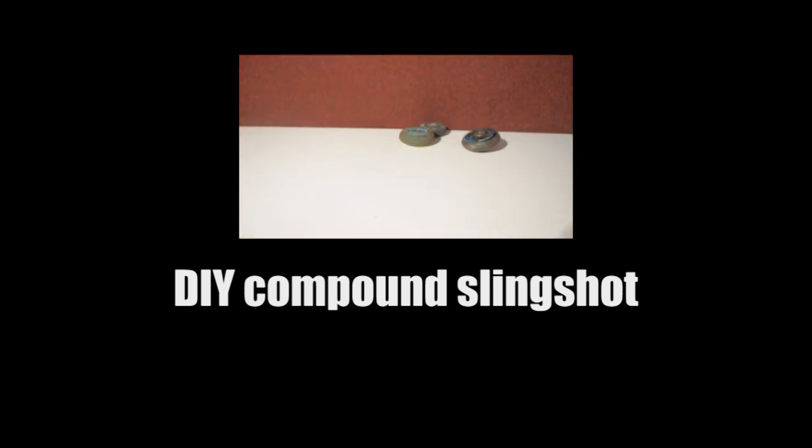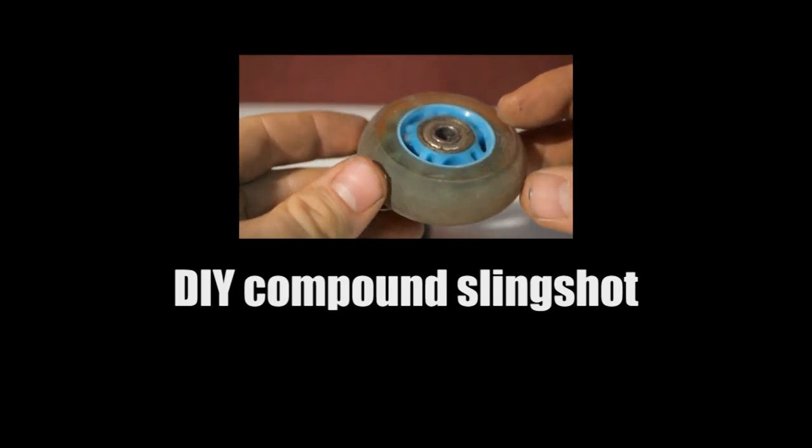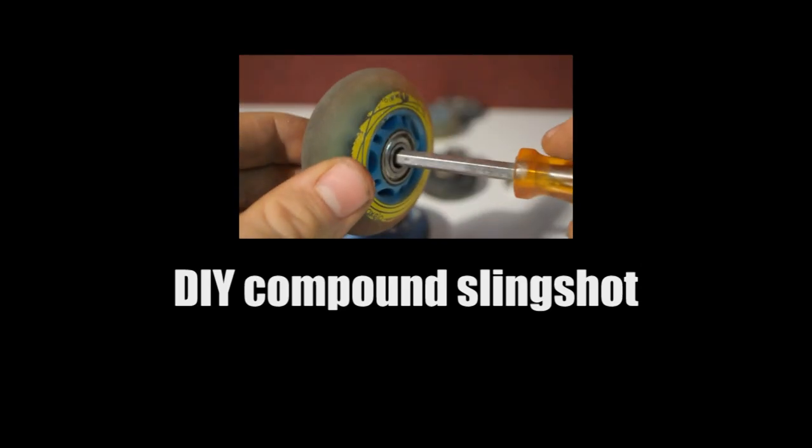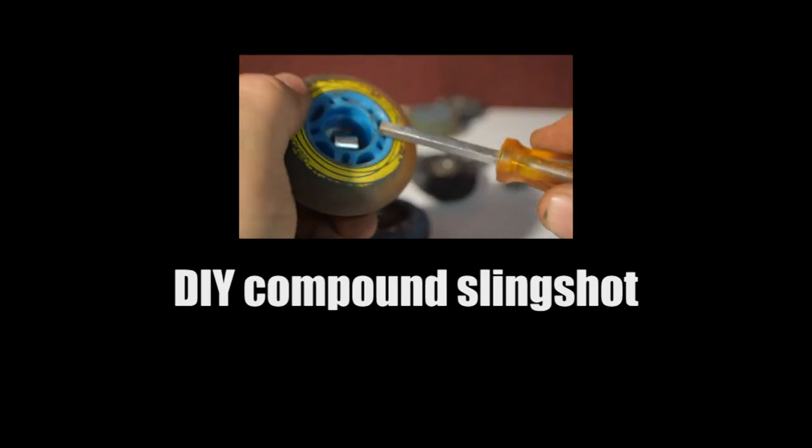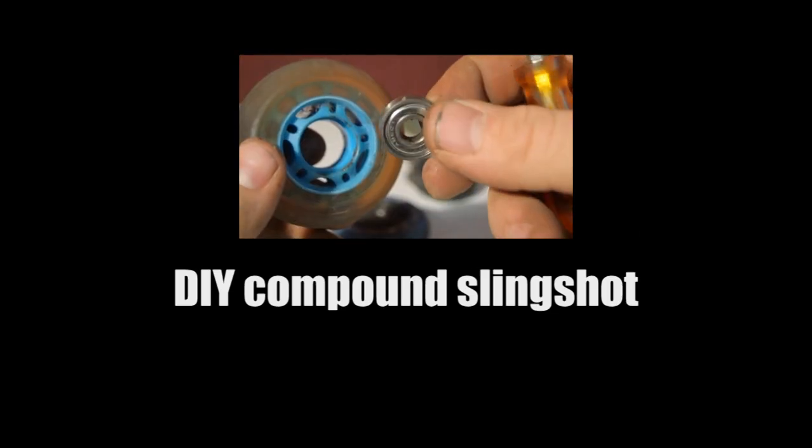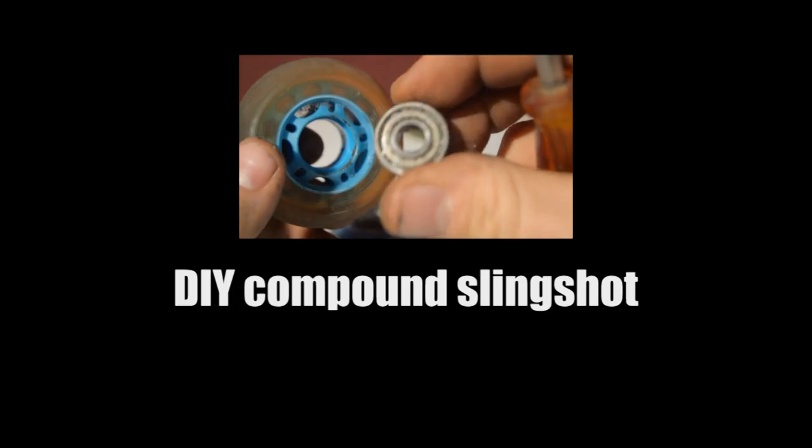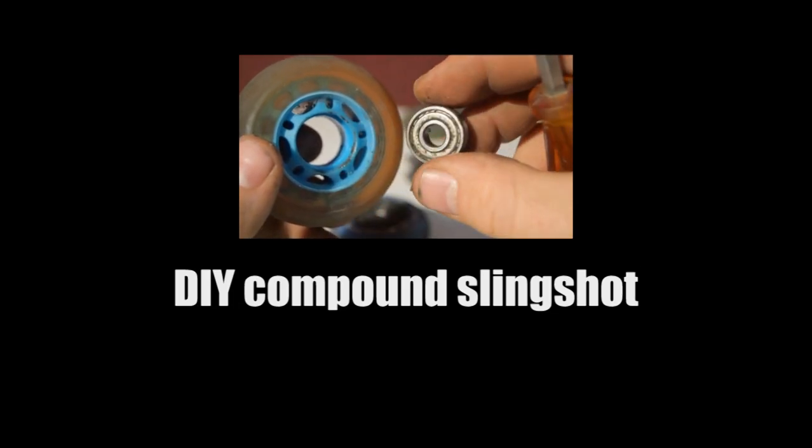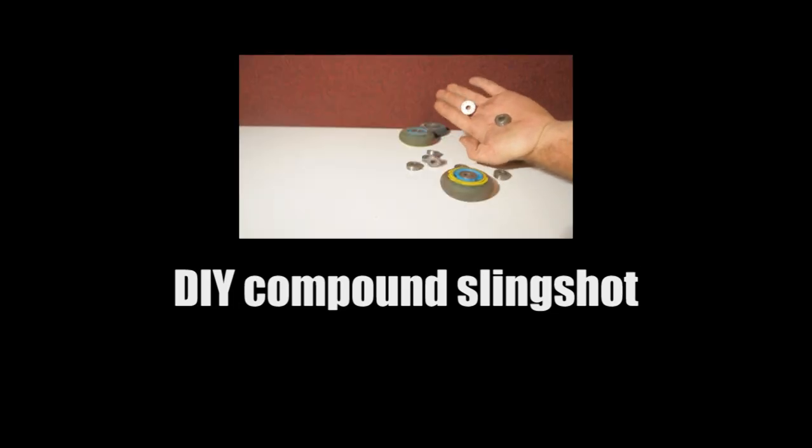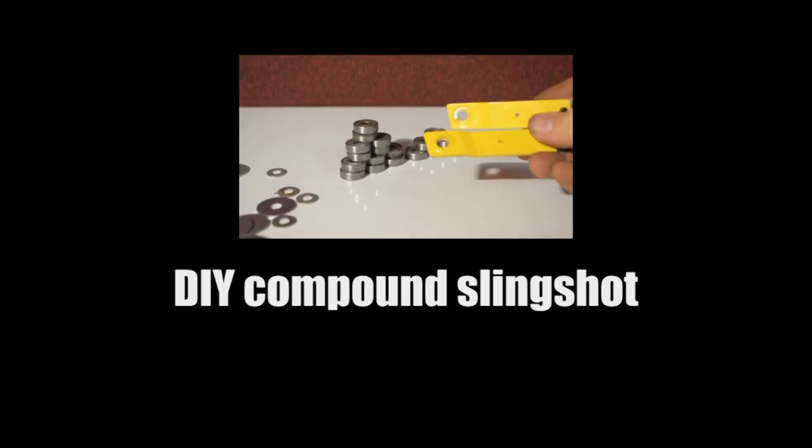Okay, first we need some rollerblade or skateboard wheels. We have to take the ball bearings outside, so push them out. It's very easy. We have to collect 24 ball bearings, so put them apart. Now we need two metal plates that have big holes on the top.